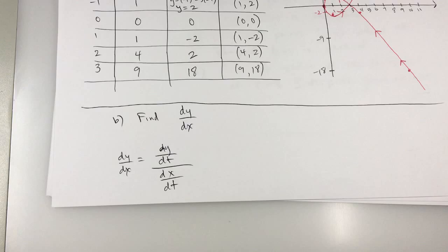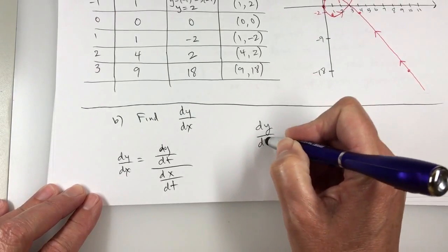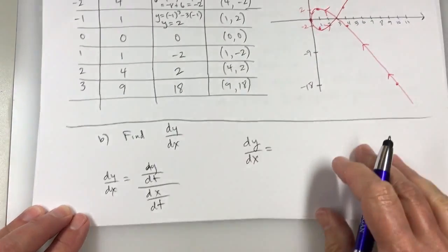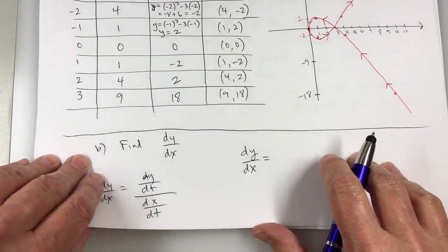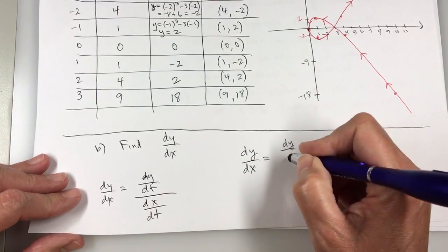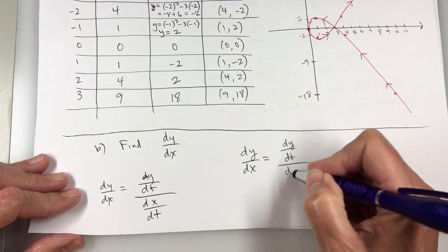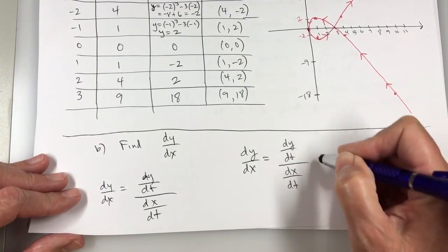And then I can say well that simplifies to dy over dx. So I'll think of the differentials as fractions and that's all I need to do. So the derivative of y with respect to x will be the derivative of y with respect to t over the derivative of x with respect to t.